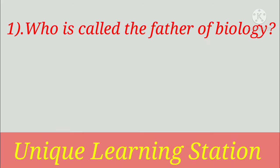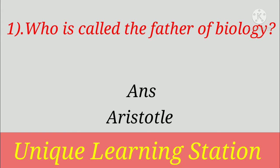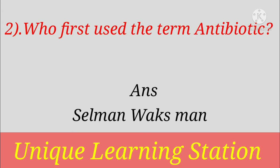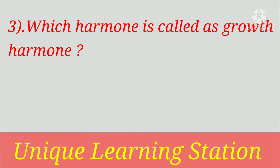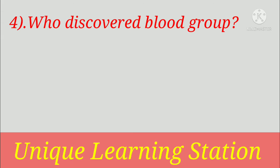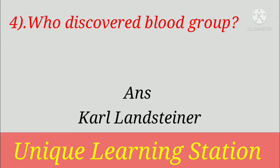Let's start. Today's first question is: who is called the father of biology? Answer: Aristotle. Who first used the term antibiotic? Answer: Selman Waksman. Which hormone is called the growth hormone? Answer: somatotropin. Who discovered blood groups? Answer: Karl Landsteiner.